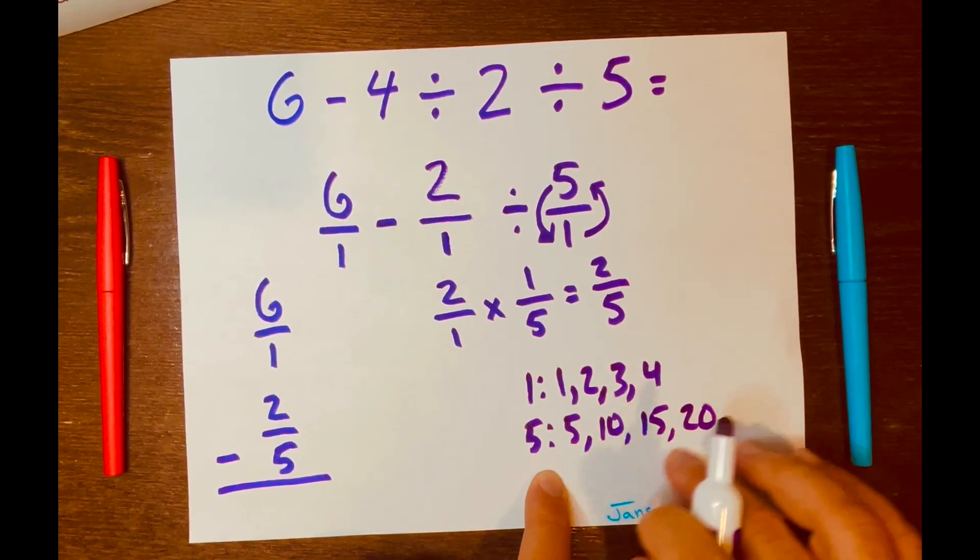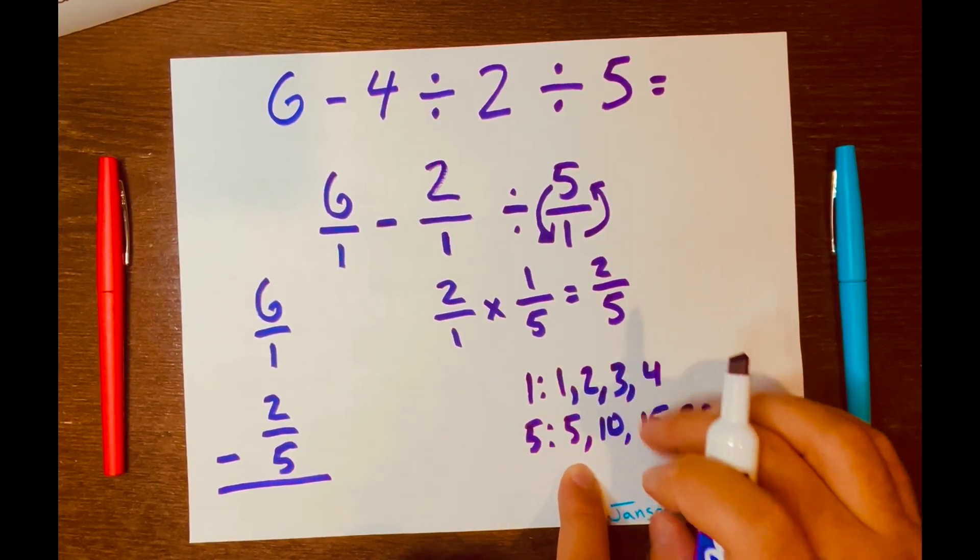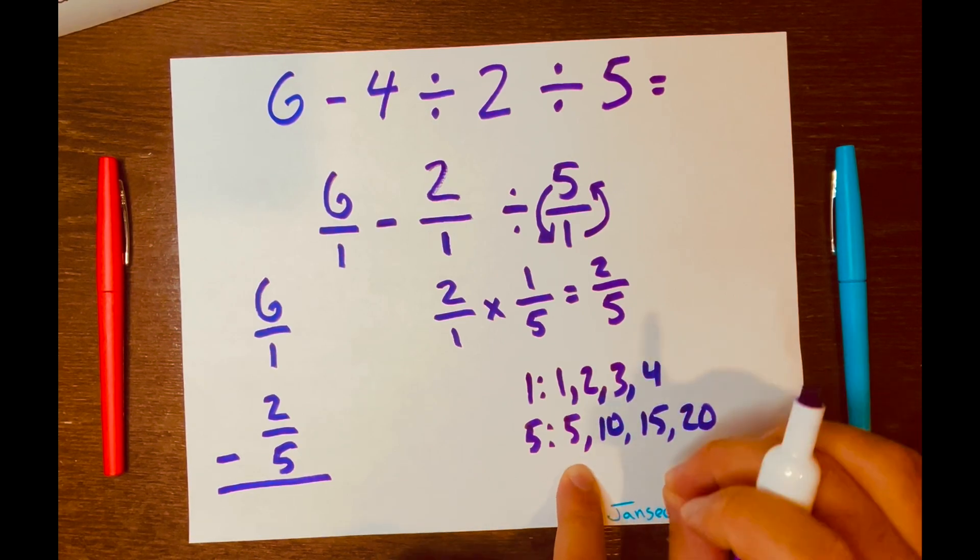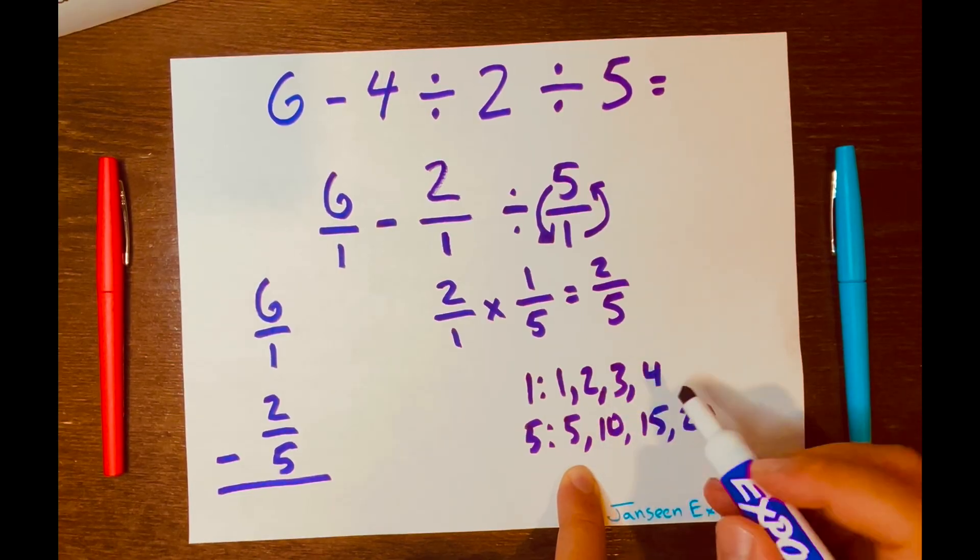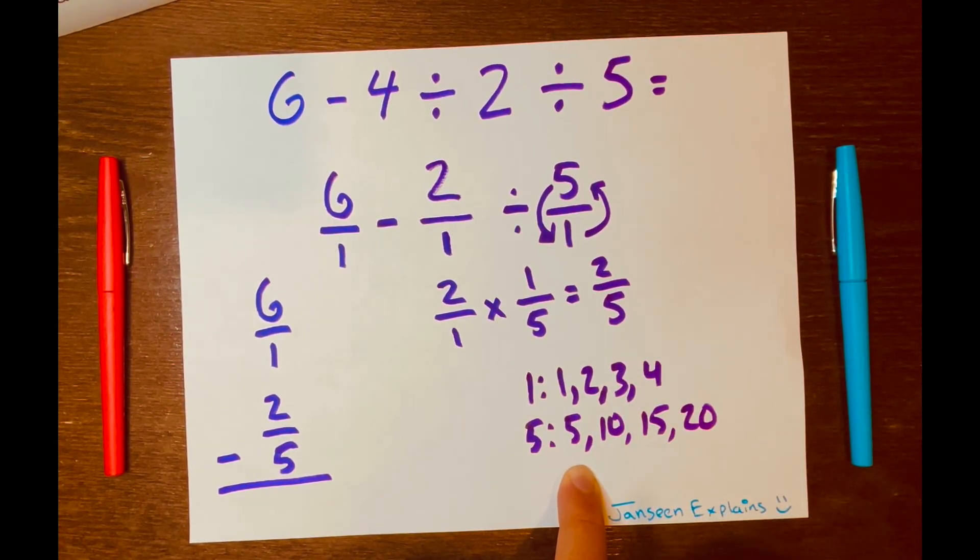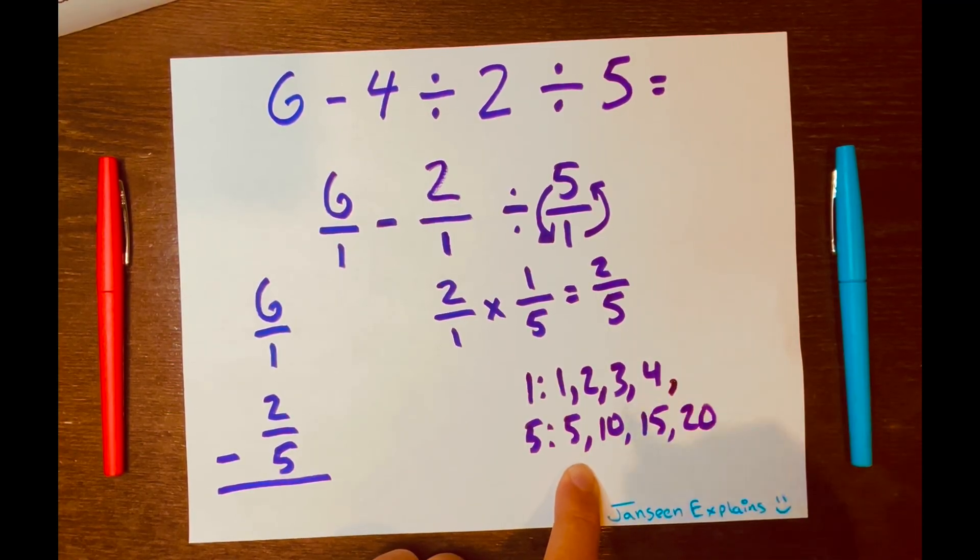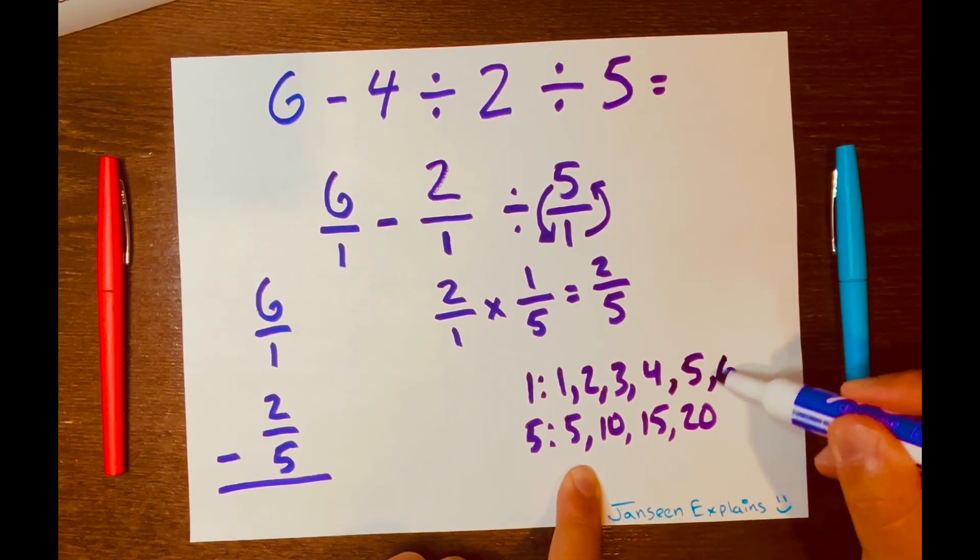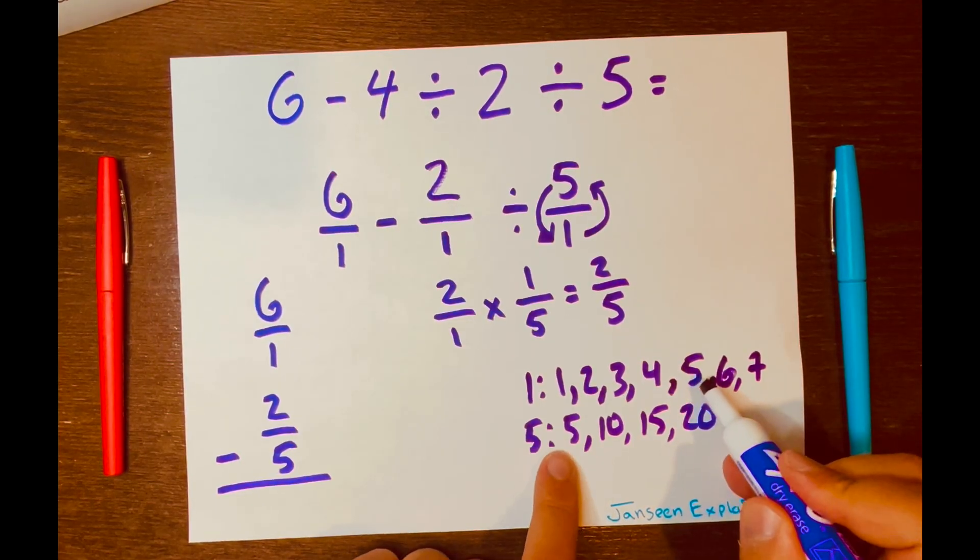So this is where the fun part comes in. You want to look at both lists of multiples and you want to find the smallest number that appears on both lists. And I see, I don't see nothing. So we got to keep going. Let's add another five multiples: 6, 7... Actually, look at that, we found something. We got 5 and 5.